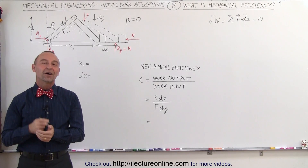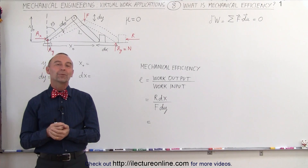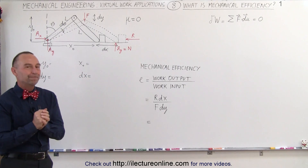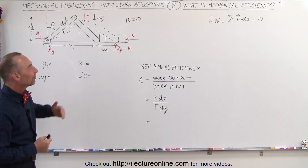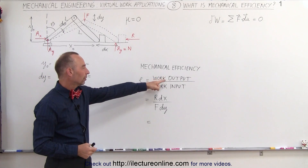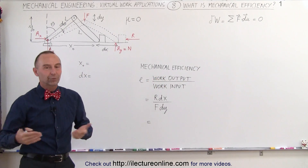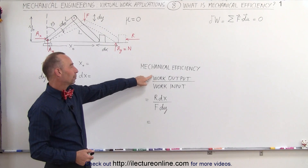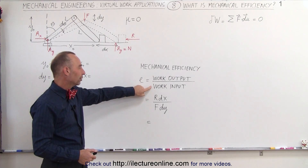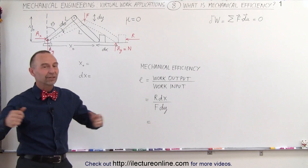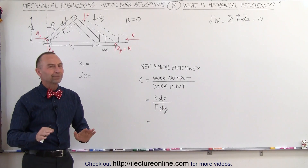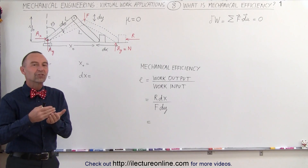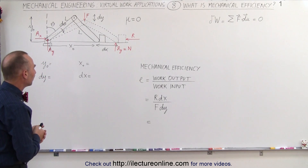Welcome to WhiteLecture Online. Our next topic with virtual work is the concept of mechanical efficiency. Mechanical efficiency is defined as the work output divided by the work input. You always want to have the maximum efficiency possible, so if the work output equals the amount of work input then you have 100 percent efficiency. In the real world that will never happen. So how do we calculate the efficiency in a particular situation?